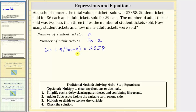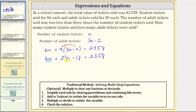If we solve this equation for n, we can determine the number of student and adult tickets sold. To solve the equation, the first step is to simplify the left side by clearing the parentheses and combining like terms. So we'll first distribute the 9. This gives us 6n plus 9 times 3n, which is 27n, and then 9 times negative 2 is negative 18. Let's write minus 18 equals 2358. Now we combine the like terms on the left side: 6n plus 27n is 33n.